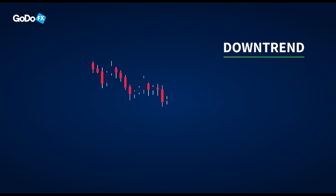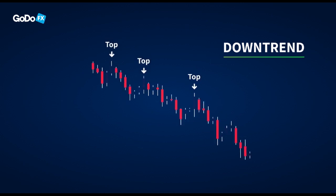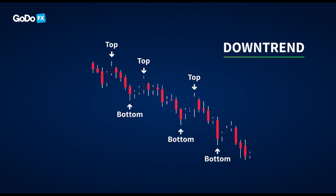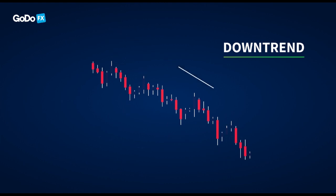In a downtrend, there are lower tops and lower bottoms. On closer inspection, one can notice that each top is lower than the previous top and each bottom is lower than the previous bottom. A downtrend is likely to continue in the same direction.